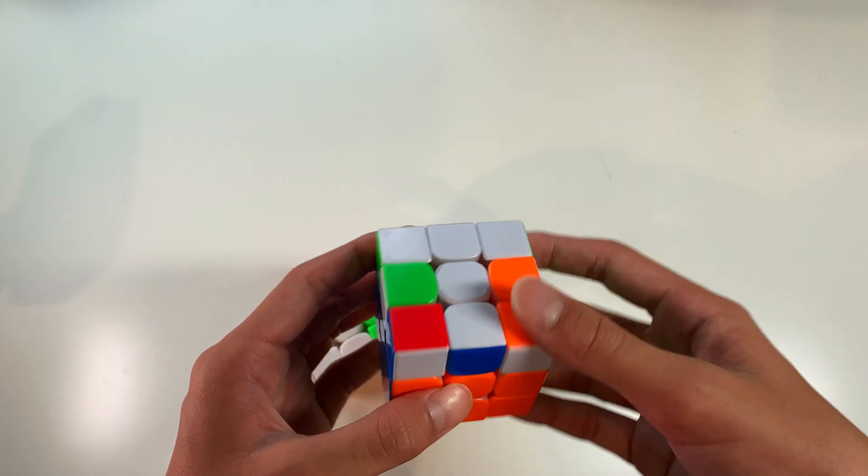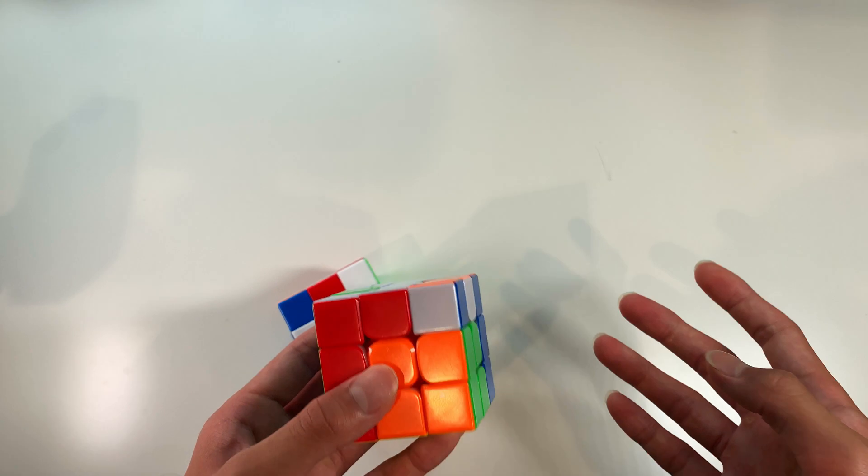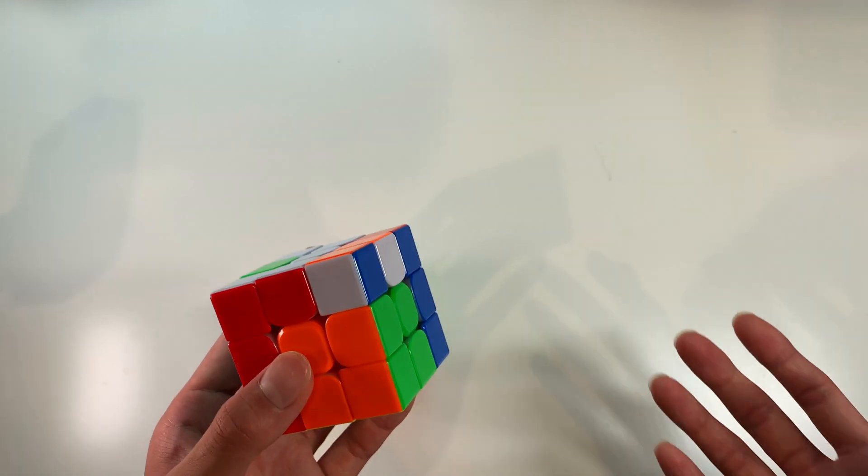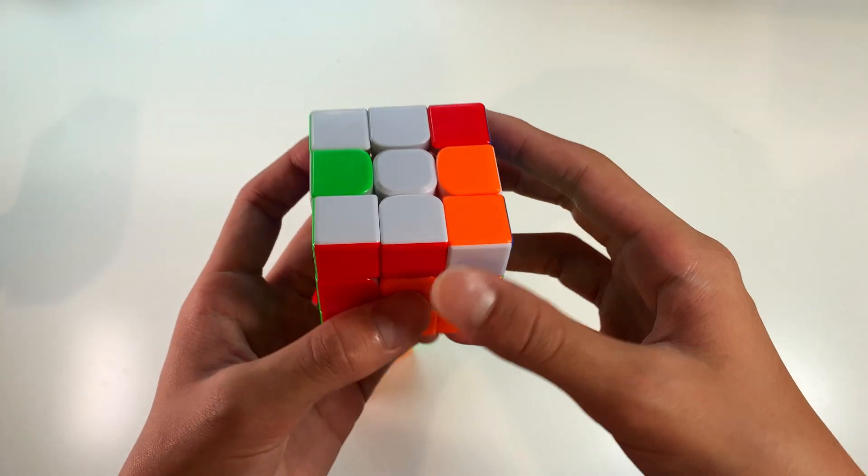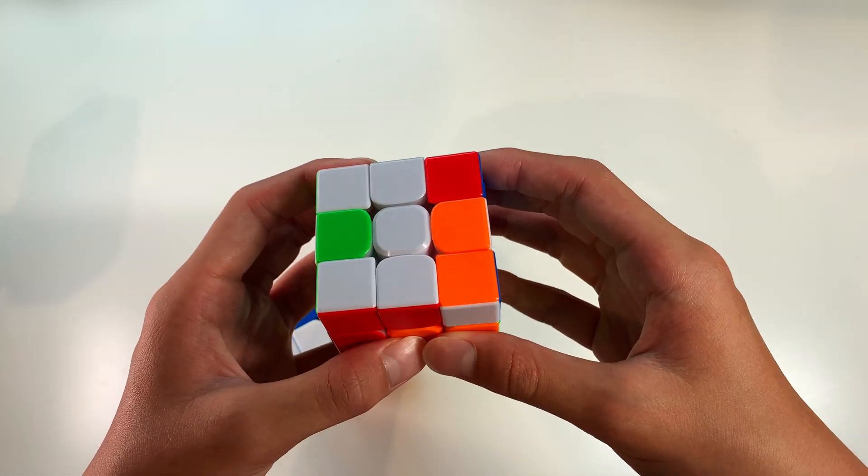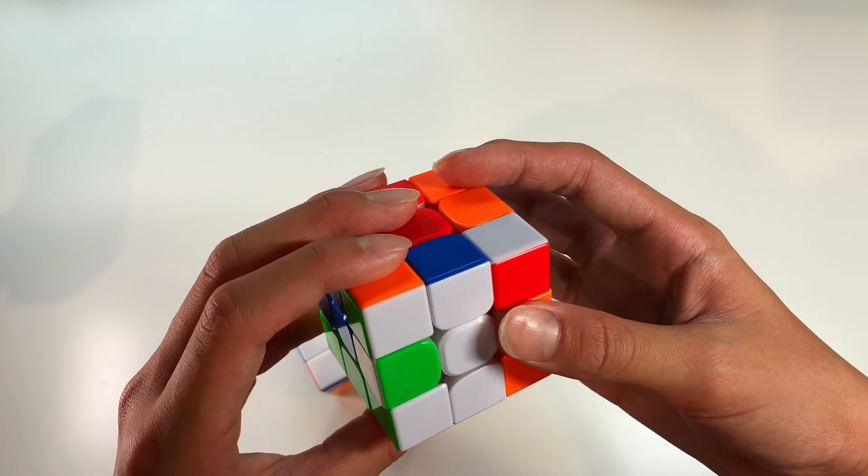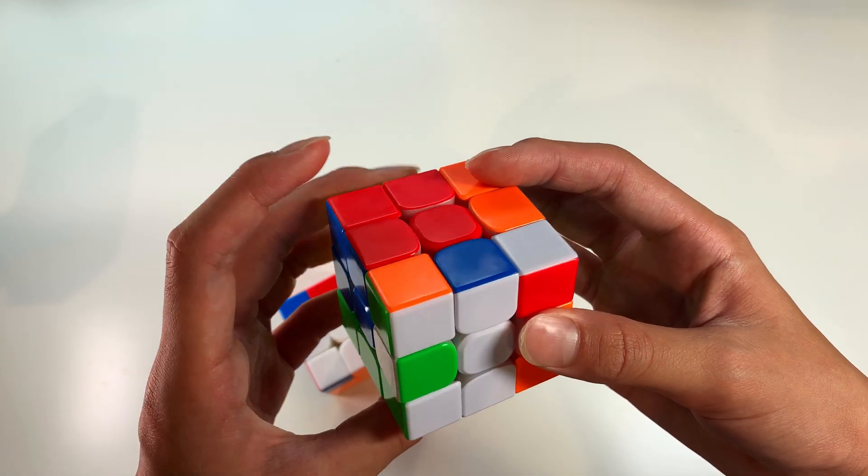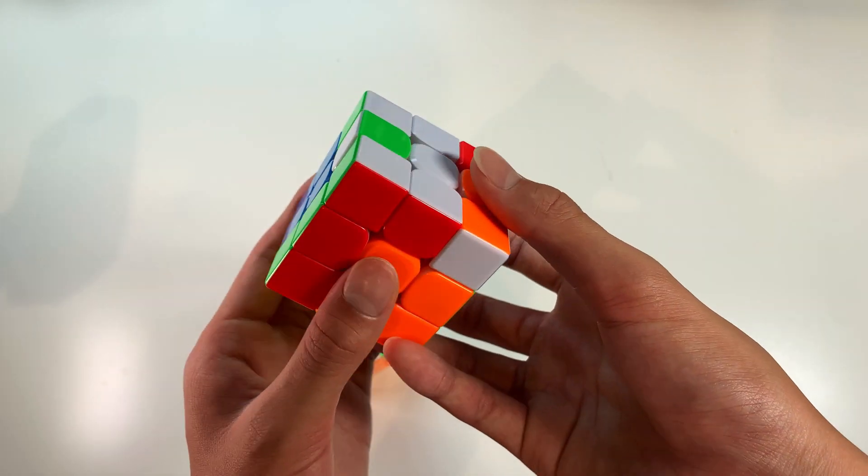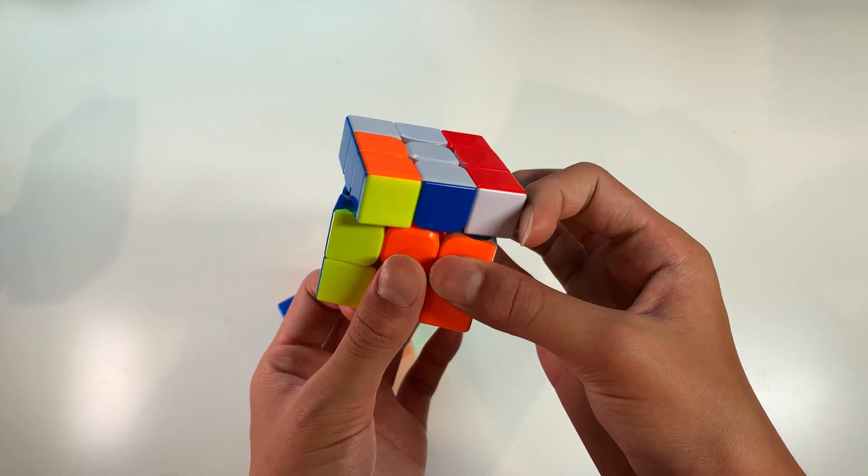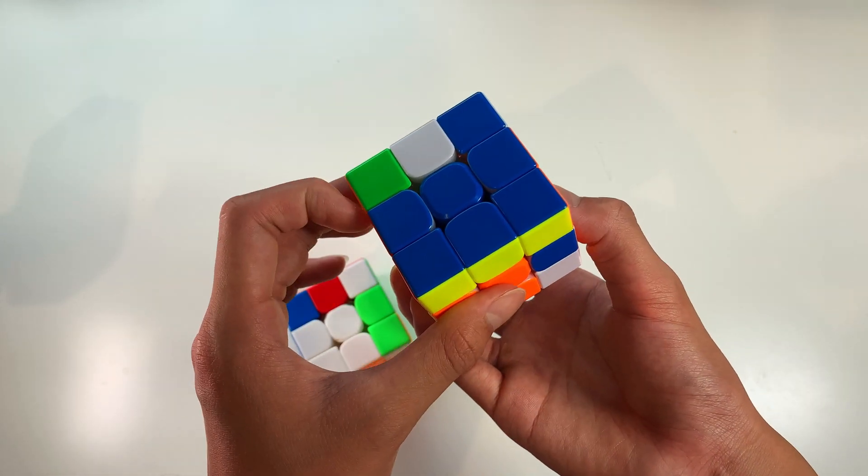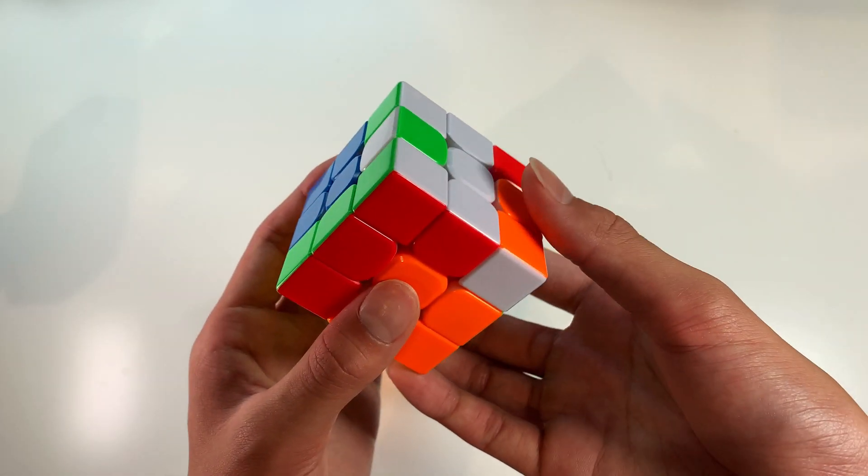However, this is not the most finger trick friendly and I see many people doing really bad finger tricks for this case. So the way I do it requires a regroup in the beginning, but then it's really fast after that. So basically what I do in this case is I put my thumb on the top and then I put my left index finger over here and I can do R' and L at the same time, U2, R and L. So doing it fast will look something like this.